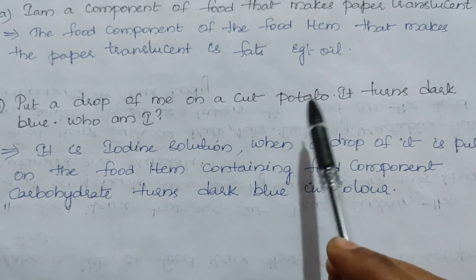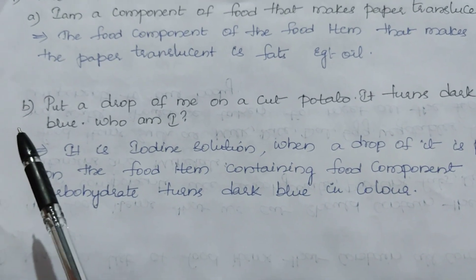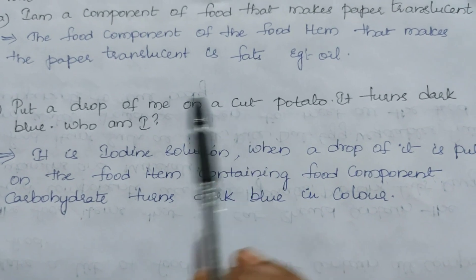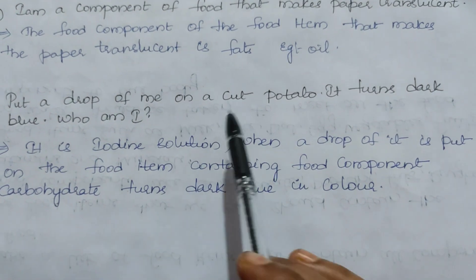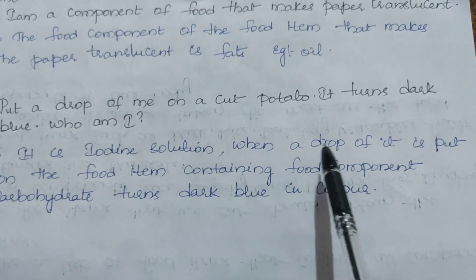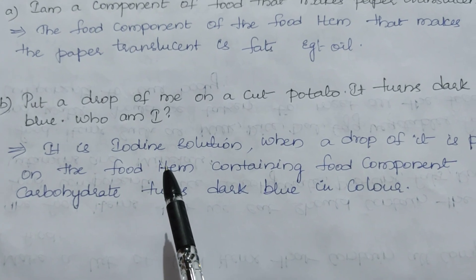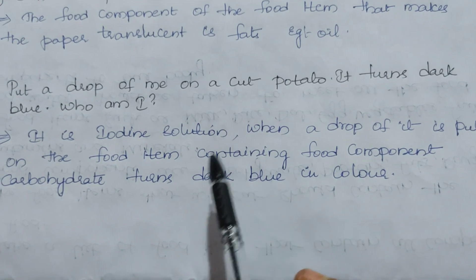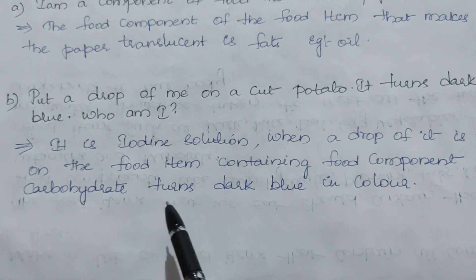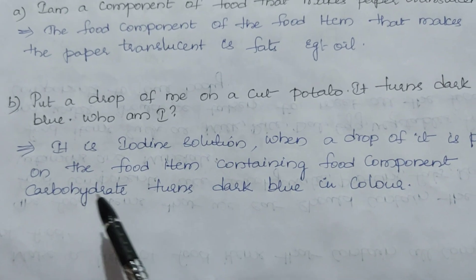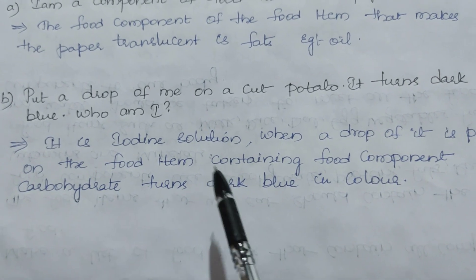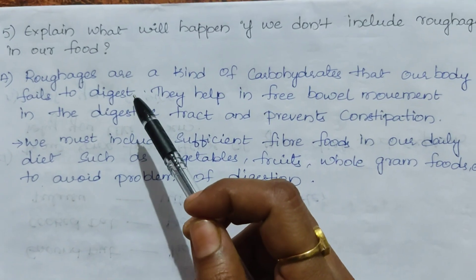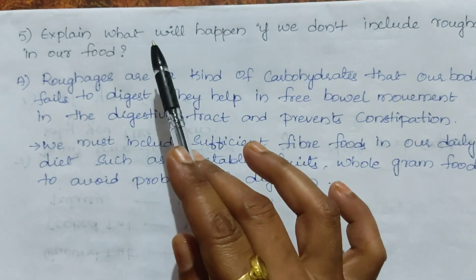The second clue: put a drop of me on a cut potato and it turns dark blue. This is the iodine solution experiment. When a drop of iodine solution is put on a food item such as potato, if the food component present is carbohydrate, it turns dark blue in color.